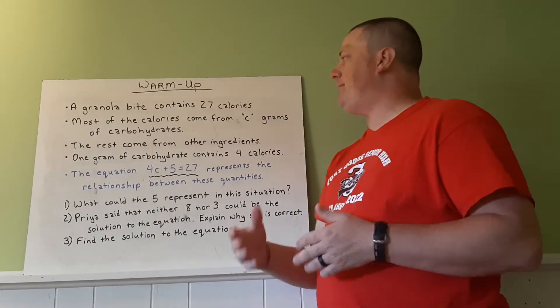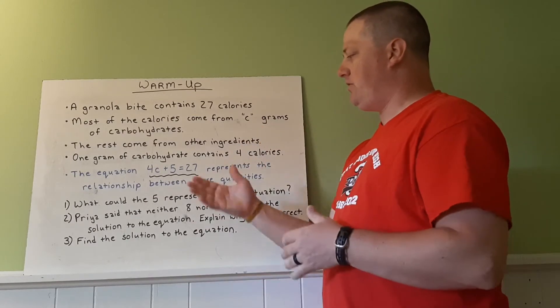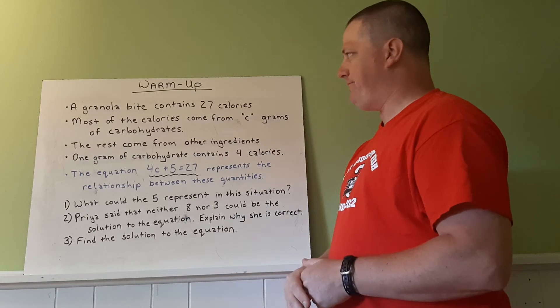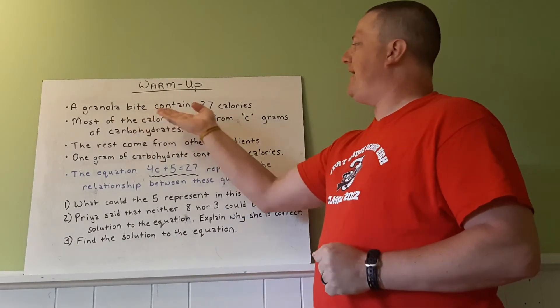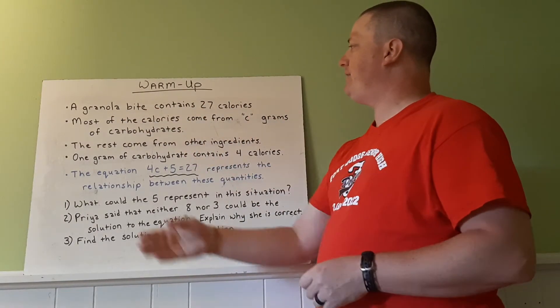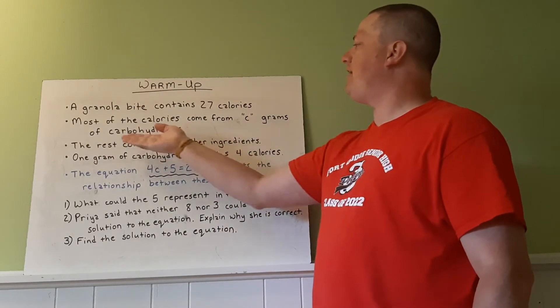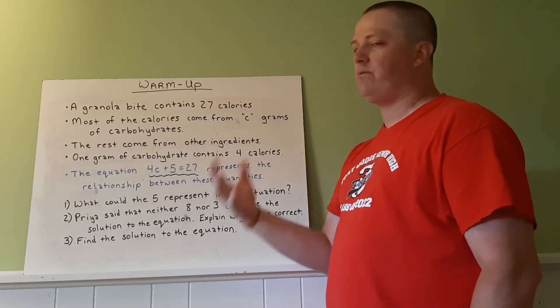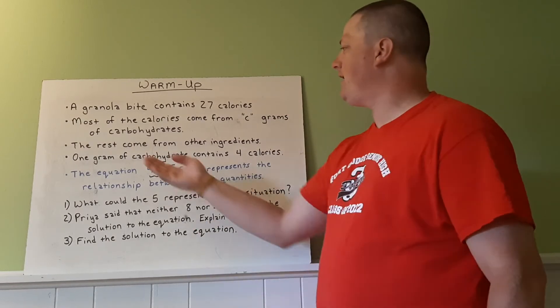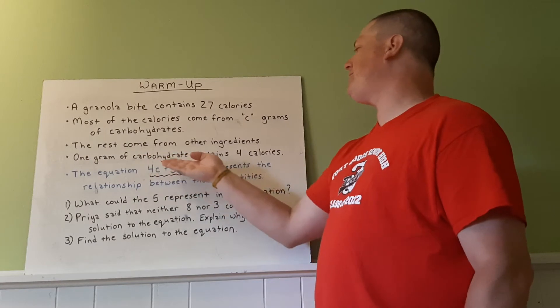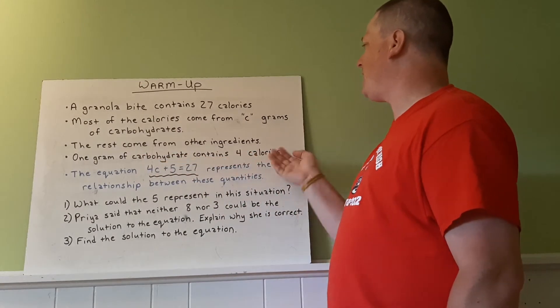All right, for your warmup, I have a problem that I want you to do, and then three questions to answer, three things to do with it. So a granola bite contains 27 calories. Most of the calories come from C grams of carbohydrates. We're using C to represent an unknown here. The rest come from other ingredients. One gram of carbohydrate contains four calories.